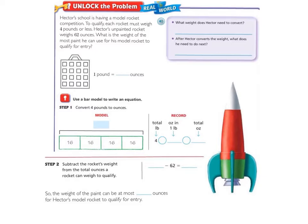The first thing we'll do is look over at our purple box here. We need to find what weight does Hector need to convert. So let's look over and see what information they give us. It says that to qualify each rocket must weigh 4 pounds or less, and Hector's unpainted rocket weighs 62 ounces.